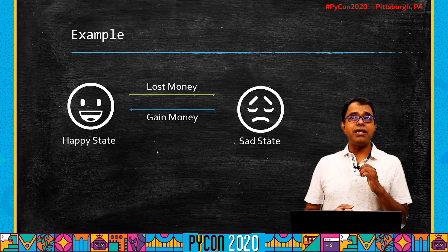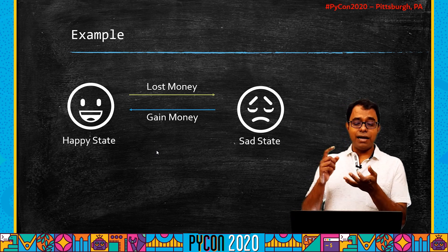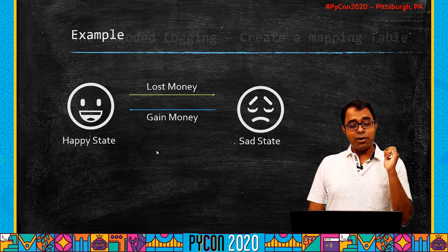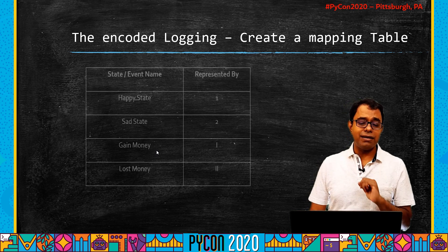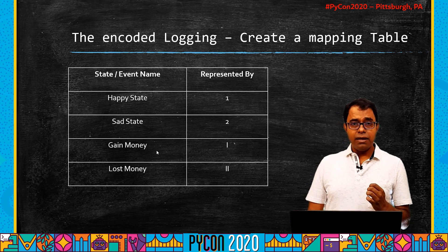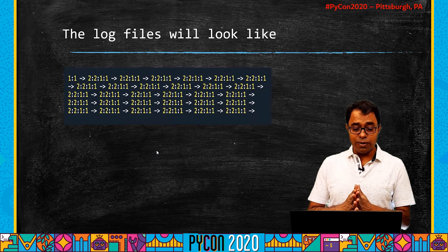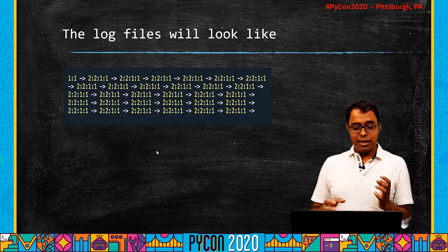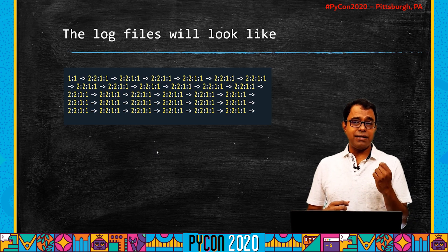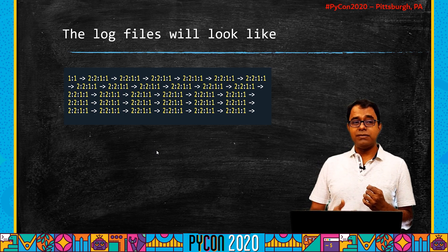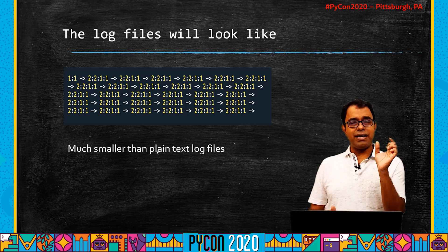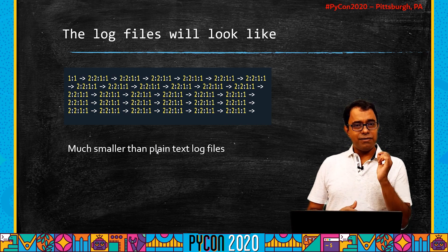But we didn't want logs that plainly wrote 'I'm in happy state, I lost money, I'm moving to sad state.' What we wanted was encoded logs, similar to what black boxes do. We created a mapping table: happy state represented by 1, sad by 2, gain and lost money represented by Roman numerals I and II. The generated log file would be a jumbled sequence of characters and numbers nobody could decode — which was extremely beneficial, as even if someone accidentally got access to these logs they couldn't decode them. It also reduces log size compared to plain text.